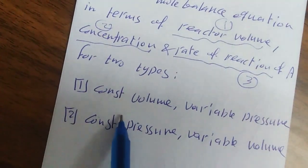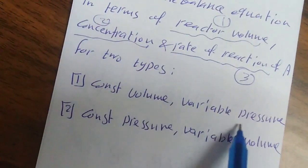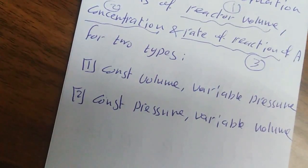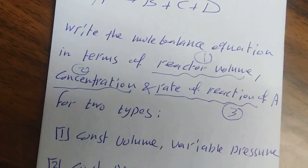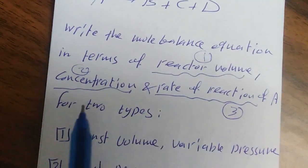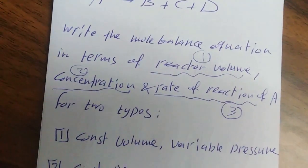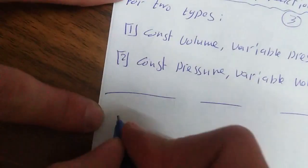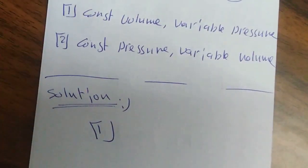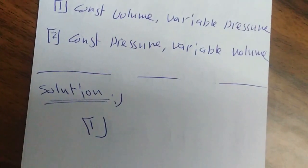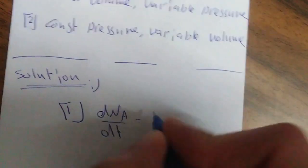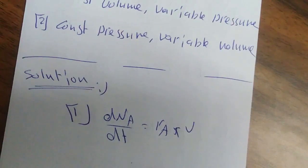في الـ Batch Reactor في نوعين: الأول constant volume لكن الـ Pressure بتغير، والثاني constant Pressure والـ Volume هو اللي بتغير. السؤال معطيني Batch Reactor ودخلت على الـ Reaction، والمطلوب أني أكتب الـ Mole Balance Equation بحيث يظهر فيها Reactor Volume والـ Concentration والـ Rate of Reaction.